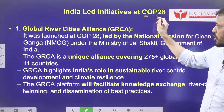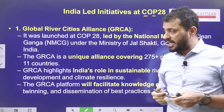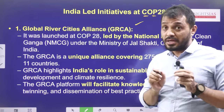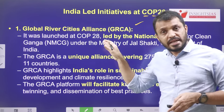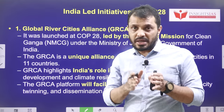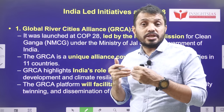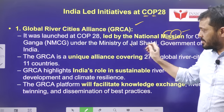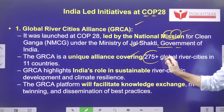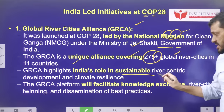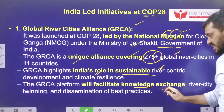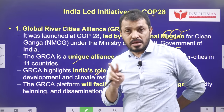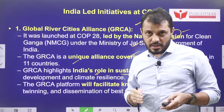Moving to India-led initiatives at COP28: the first is the Global River Cities Alliance. This idea is about the conservation and sustainable use of urban rivers, and promotes river conservation across the globe. It was launched at COP28 by the National Mission for Clean Ganga under the Ministry of Jal Shakti, Government of India. It is a unique alliance covering 275 global river cities in 11 countries, focused on sustainable river-centric development. This platform facilitates knowledge exchange and river city twinning — where cities from different countries exchange MOUs to share best practices.